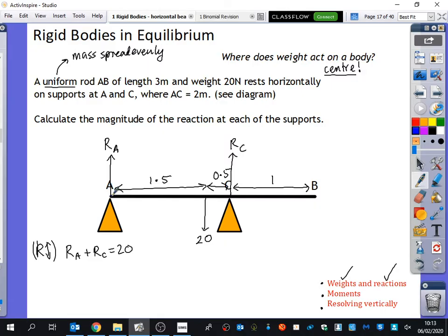So Hamza's just suggested that we should take moments either about here. And what happens if you take moments about here, Hamza? RA would get cancelled out because the distance is zero. The distance of RA to that point is zero. So when you multiply that force by its perpendicular distance, you get zero and it disappears. So this is a fantastic place to take moments from because you'll be able to quickly find out what RC is. Where would you take moments from if you wanted to find out what RA was? At point C. And you'd have different clockwise and anticlockwise there.